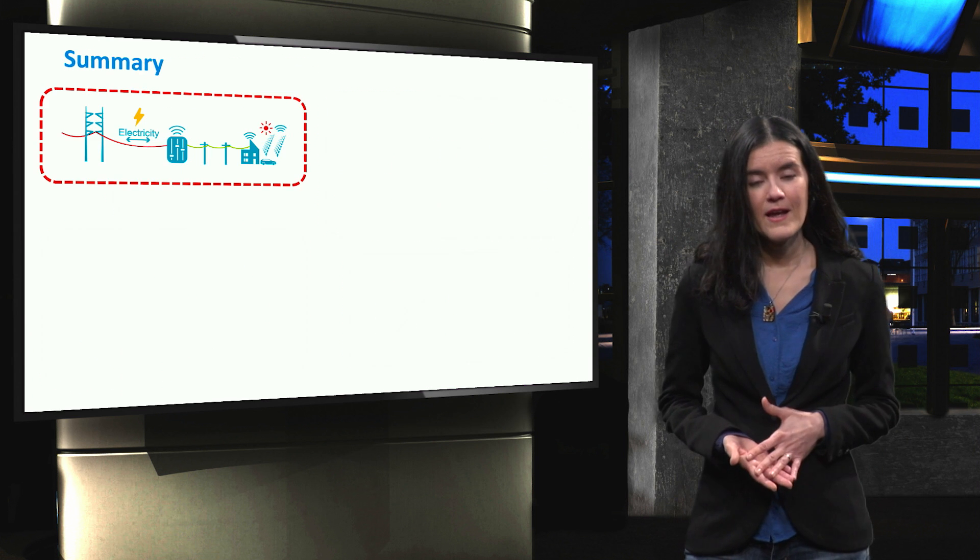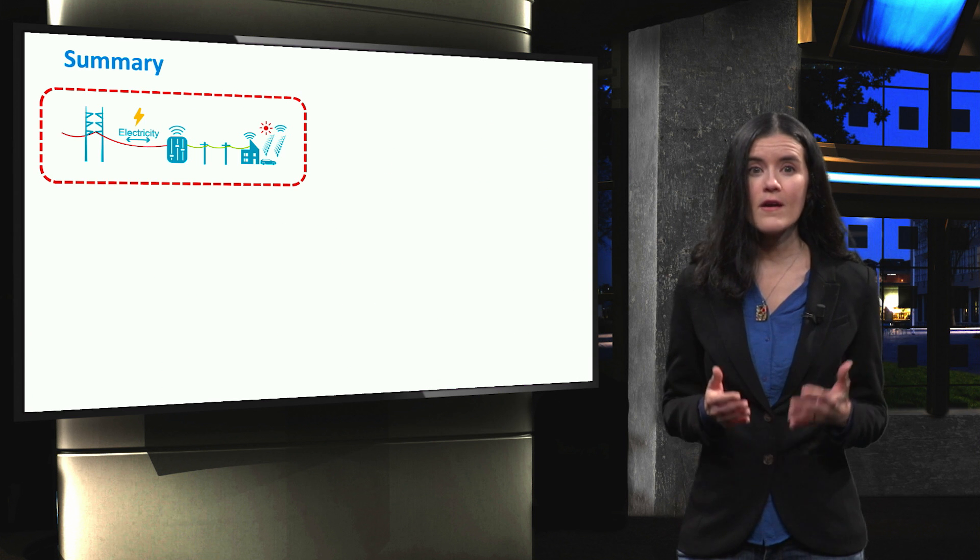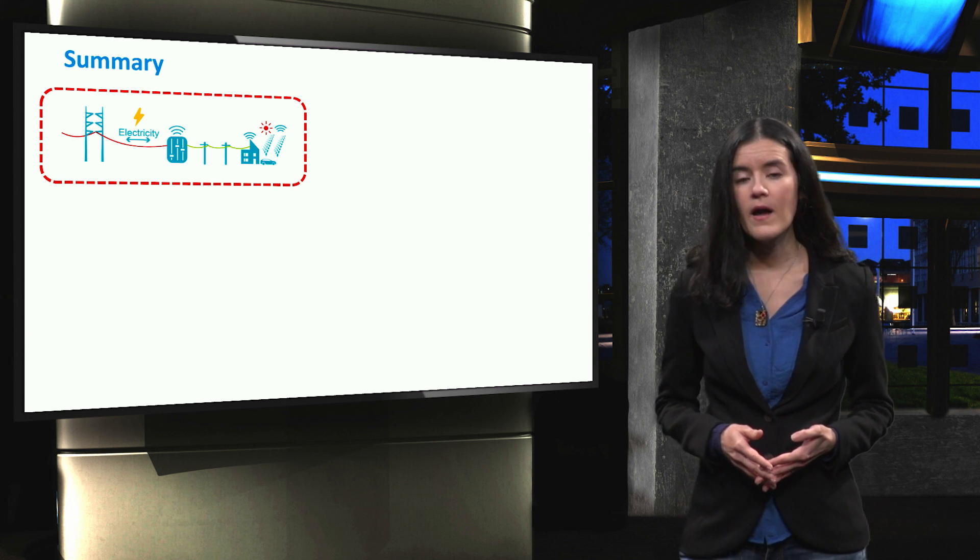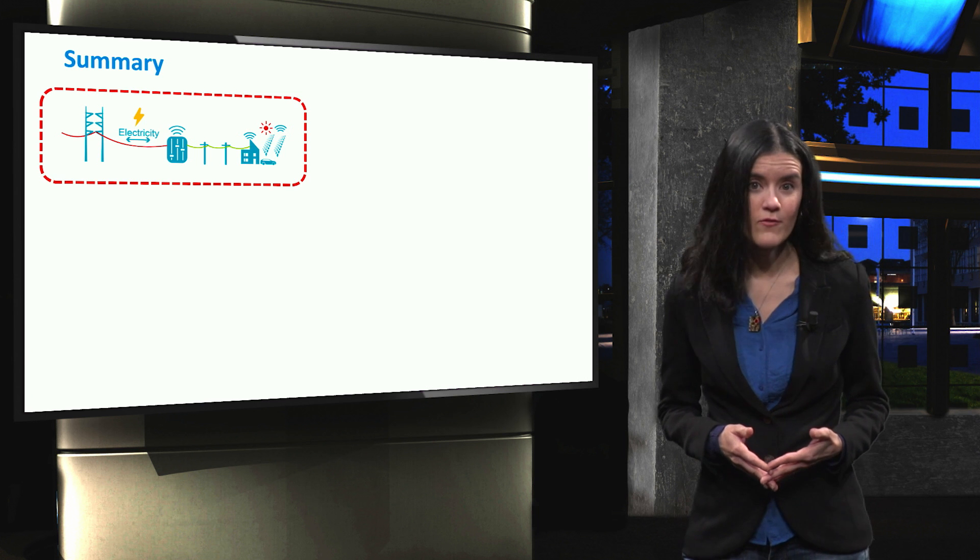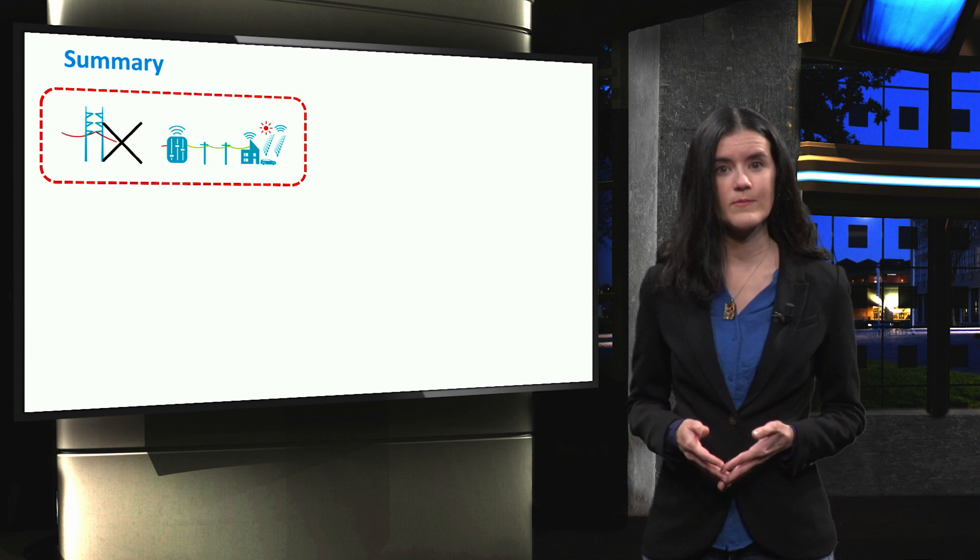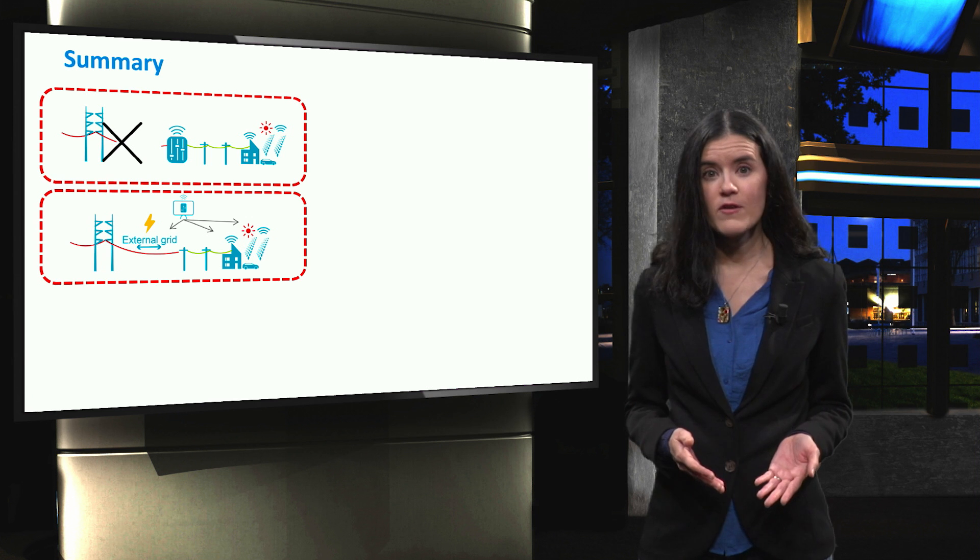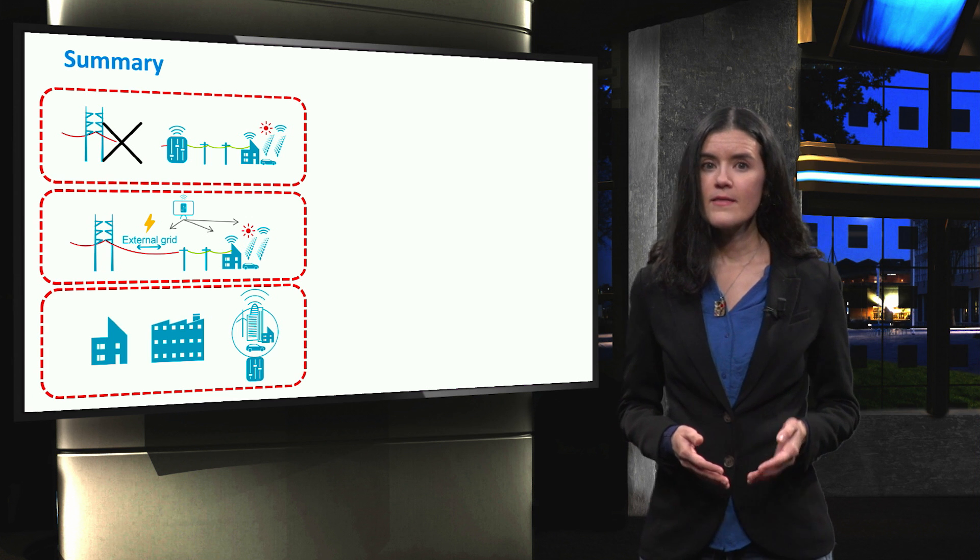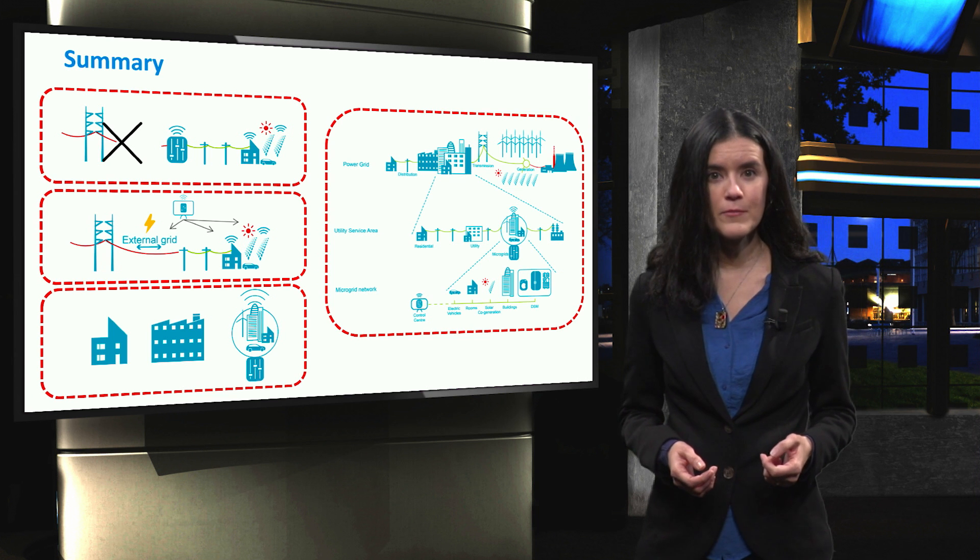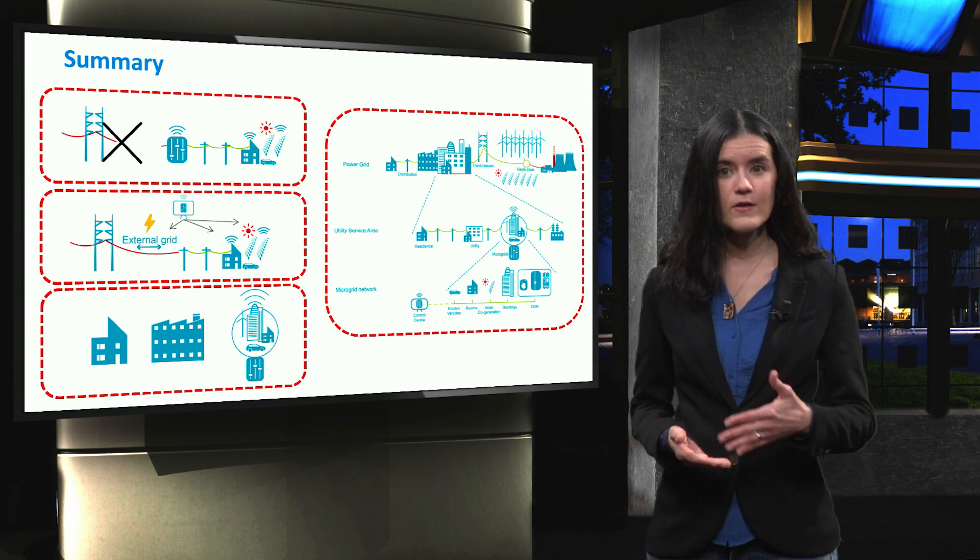In summary, in this video we defined a microgrid and we saw that there are four main characteristics that must be present in every microgrid. A microgrid is an integration platform for distributed generation and loads. It can work either in grid connected or islanded mode. It is characterized by active operation and it can be found in multiple scales. Then we identified the electrical power grid layers and the potential benefits that microgrids can provide to both the main grid and the consumers.